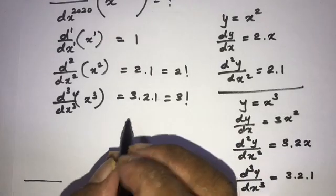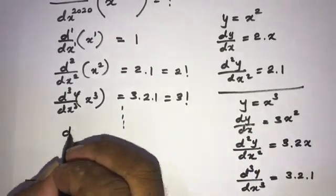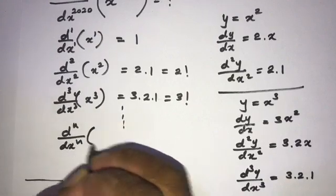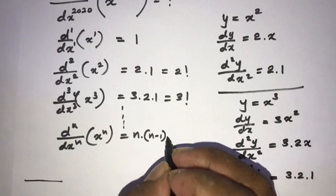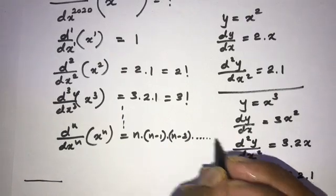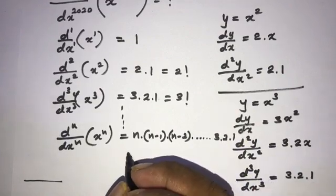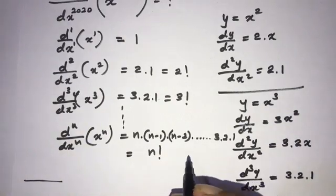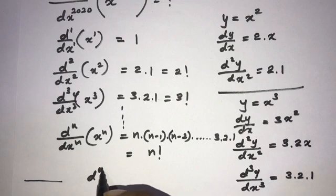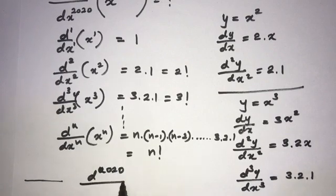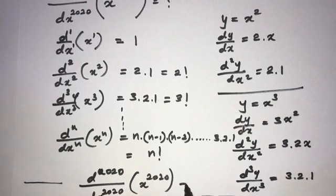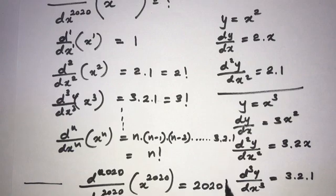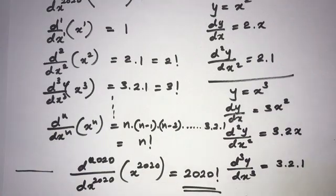There is a pattern: the nth derivative of x to the n is equal to n factorial. Applying this, the 2020th derivative with respect to x of x to the 2020 is equal to 2020 factorial. So this is the answer. If you like this video, please subscribe. Thank you for watching.